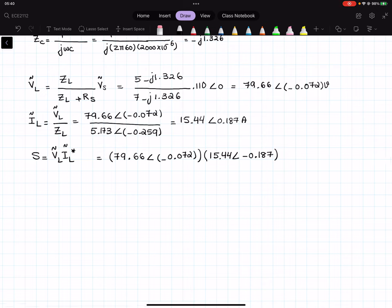When I multiply these two, I'm going to get 1,233 with the angle of negative 0.529. And if I take this to the rectangular format, my S will be equal to 1,192 minus j316 watts. Now, here I can say that this is my P average, and this is my Q.